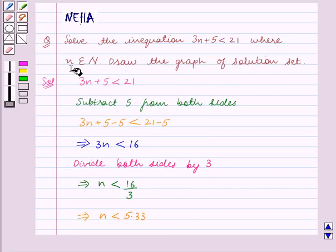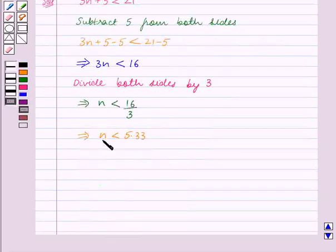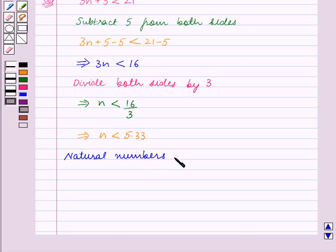We are given that n belongs to the set of natural numbers. The solution set is all the natural numbers which are less than 5.33. We know that natural numbers less than 5.33 are 1, 2, 3, 4, 5.